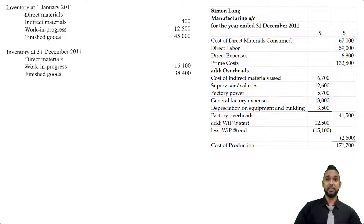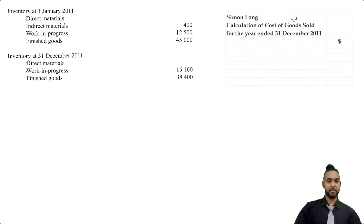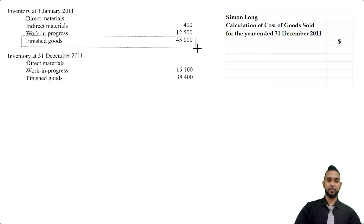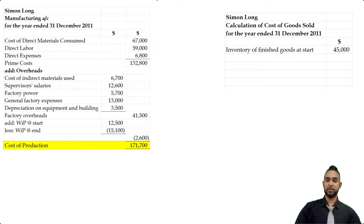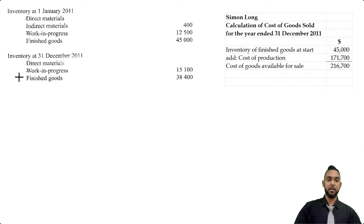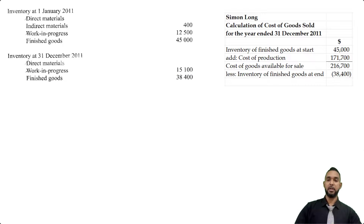That's it for part B. Part C asks us to calculate the cost of goods sold. Remember to head up your statement with the name of the entity, name of the statement, and period to which it applies. We start with opening stock of finished goods of $45,000, then add cost of goods manufactured of $171,700 — found in the previous part — giving us cost of goods available for sale. From that we subtract closing stock of finished goods of $38,400, giving us cost of goods sold of $178,300. That's the end of the question.